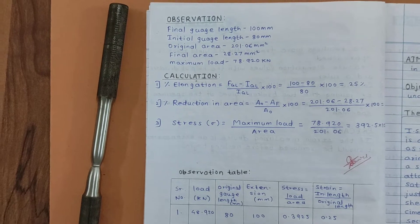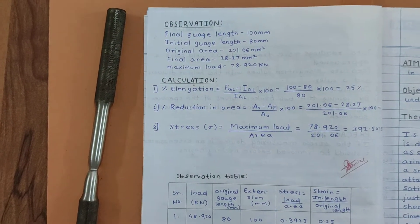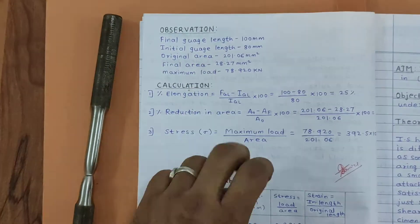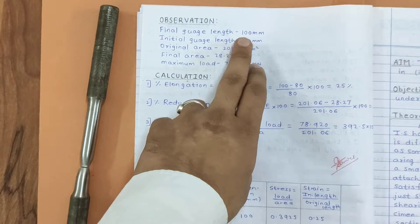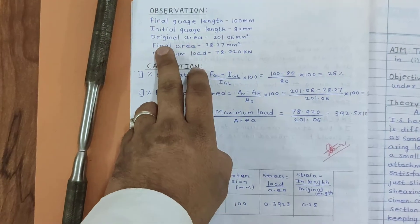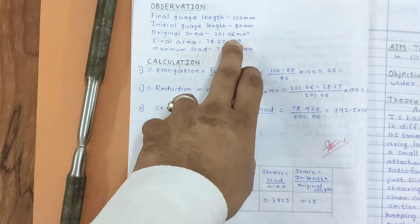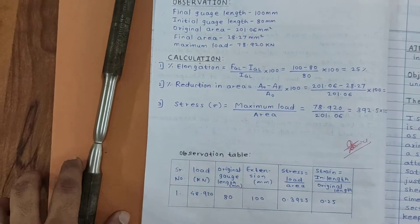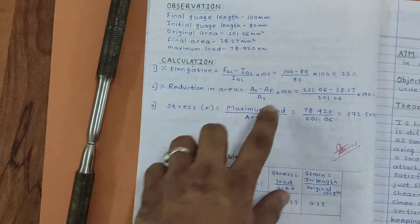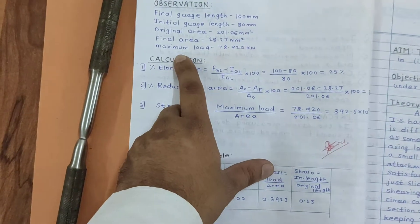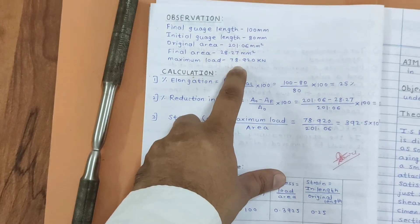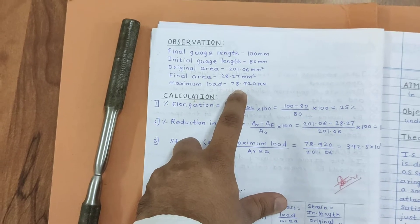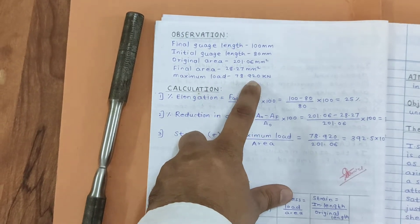Now we will do the calculation part for this specimen. These are the observations: final gauge length is 100 mm, initial gauge length is 80 mm, original area is 201.06 mm², final area after deformation is 28.27 mm², and maximum load is 78.920 kilo Newtons.